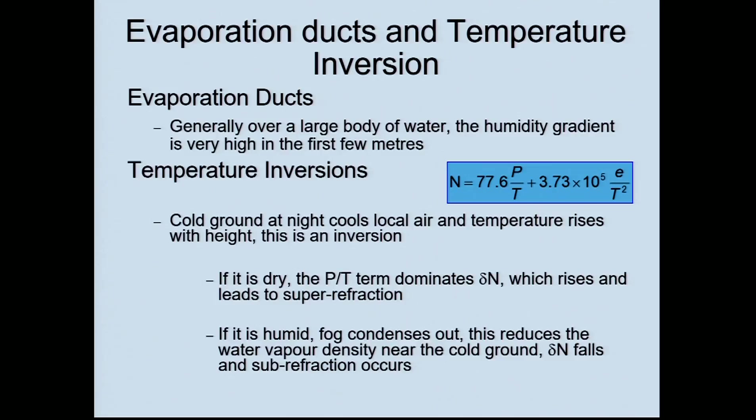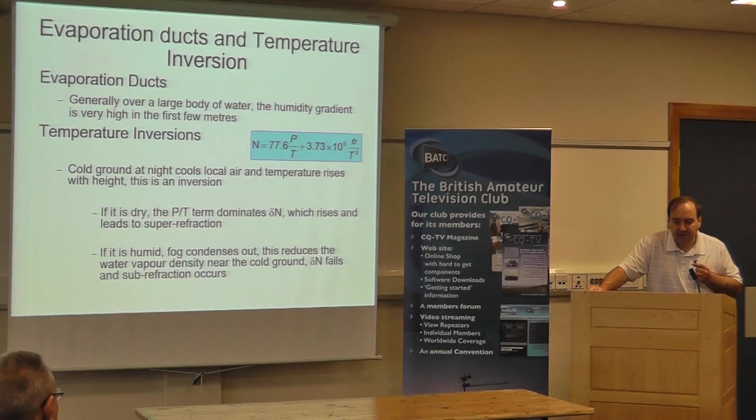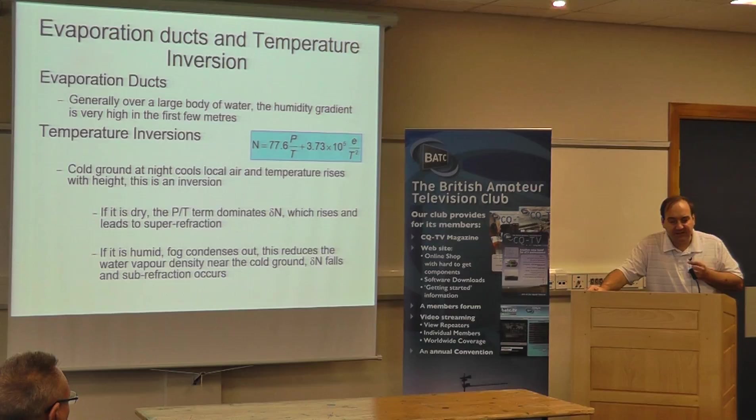Temperature inversions: the cold ground at night cools the air locally close to the ground. The air above it is warm, and that means temperature is rising with height — that's not normal. Normally temperature falls with height. If it's dry, the dry term dominates and that leads to superrefraction. If it's humid, we tend to get fog, which reduces the water vapor density near the cold ground. That effectively means subrefraction, which is bad because it kills your signals.